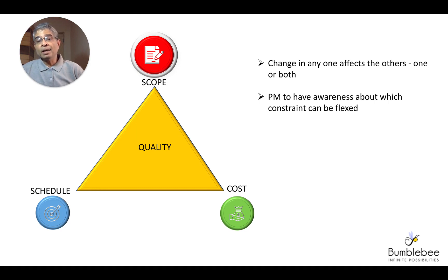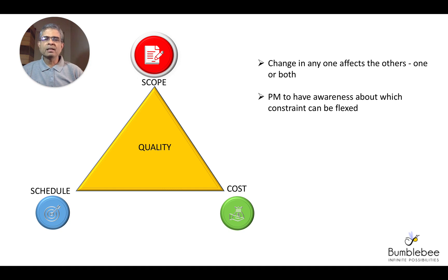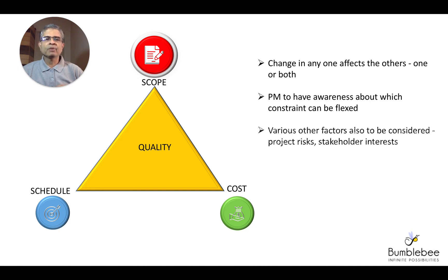In the first case, the budget may be flexible but the schedule is fixed, so it may be possible to put more people and get a slightly higher budget allocation, but the time is more important. In the second case, the cost is fixed, so the customer may be willing to take some hit on the scope or the schedule, but the cost is fixed. Keep in mind these aspects while deciding how to manage within the three constraining aspects of the PM triangle.